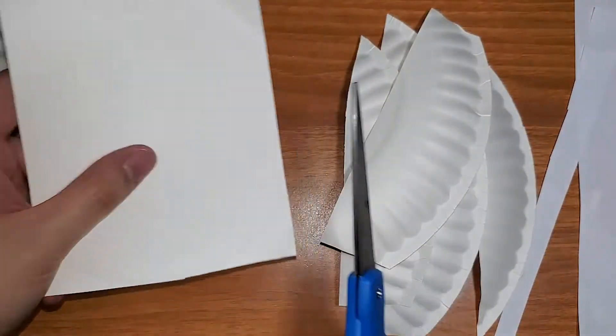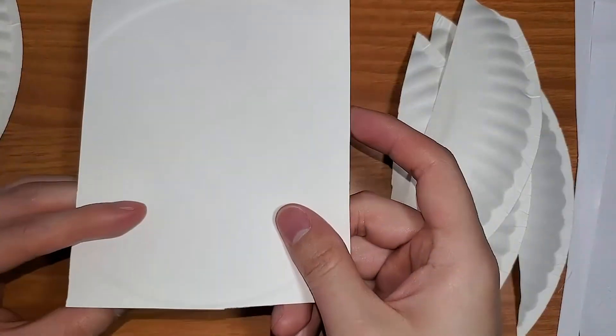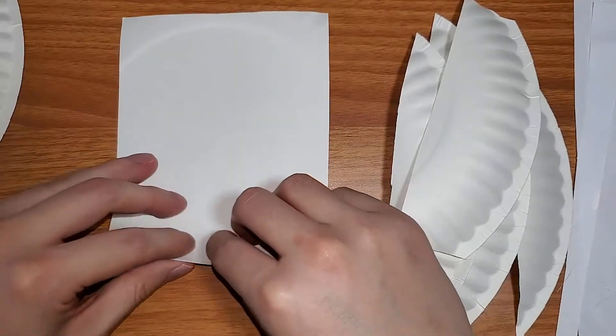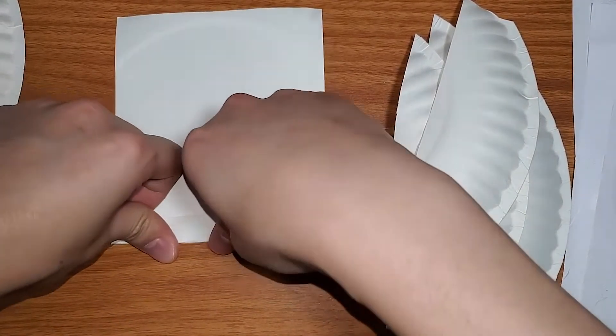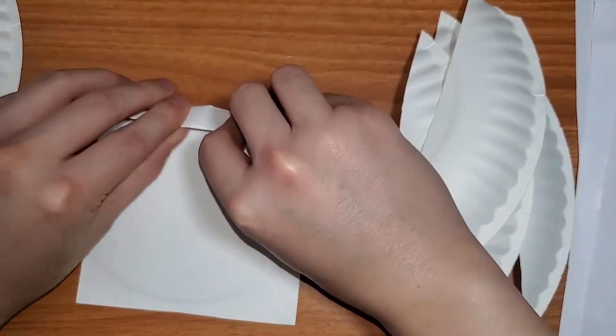With the flat portion now removed, what we can do is go ahead and fold this in an accordion style. What that means is we fold it forward one ways and then we're going to flip it the opposite direction the next.